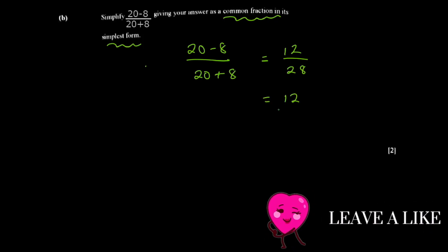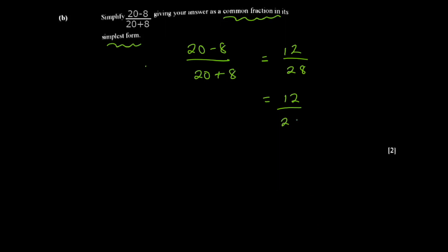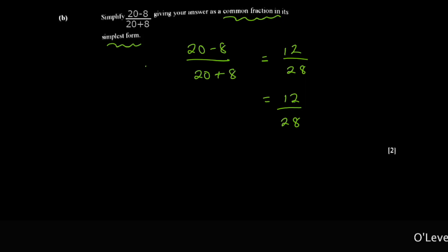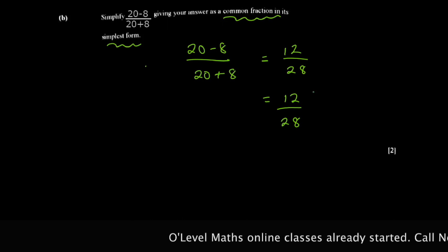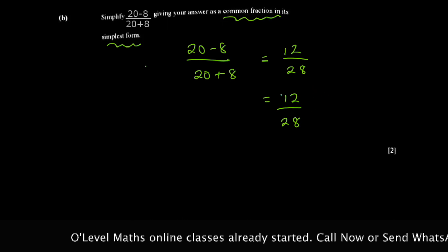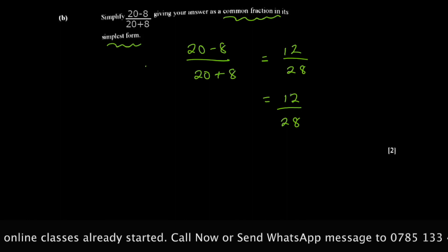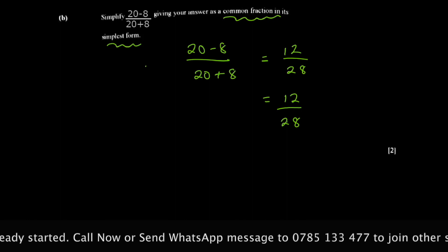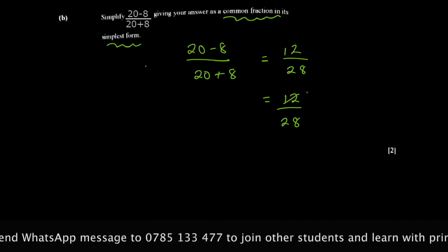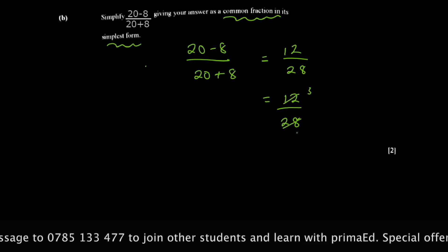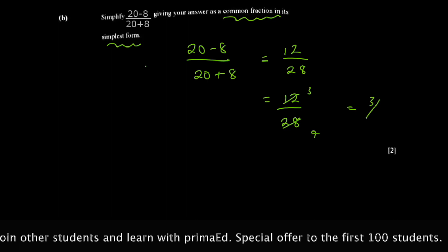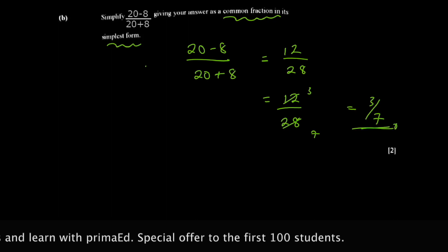So 20 minus 8 gives you 12, and 20 plus 8 gives you 28. Now you need to simplify to the lowest terms — find the highest common factor. The highest common factor of 12 and 28 is 4. Four into 12 gives 3, and four into 28 gives 7, so you get three over seven.